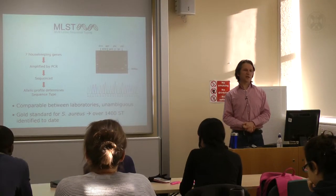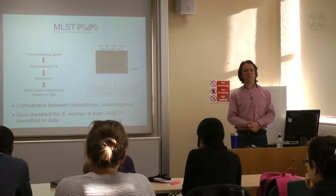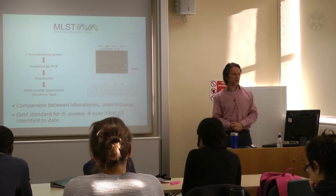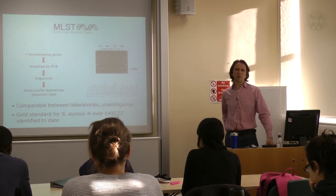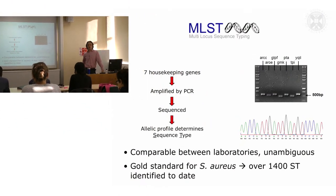A very useful technique traditionally used for looking at population genetics of Staph aureus is MLST — multi-locus sequence typing — which gives you a snapshot of the sequence diversity within the genome. It looks at seven different housekeeping genes and allows you to discriminate between Staph aureus strains.